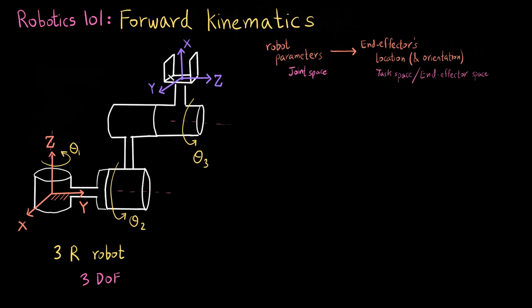The moving frame is defined at the tip of the end effector — here I have defined it at the base of the gripper, so this is my moving frame. Now what I need to find out is a homogeneous transformation matrix that takes the fixed frame to the end effector frame. If I find out that homogeneous transformation matrix, I should be able to extract the displacement vector out of it, which would give me the location of the end effector with respect to the fixed frame.